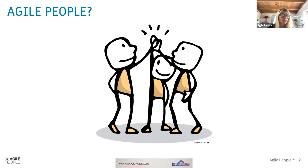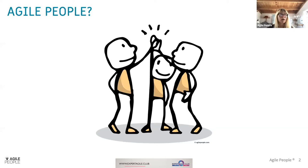We have taken the values and principles from the Agile Manifesto, mixed them with the Modern Agile framework, and spiced it up with our own Agile People Manifesto that you can find on agilepeoplemanifesto.org. From there we created 35 principles that we believe all organizations, regardless of size or industry, need to embrace. But today we are not going to talk about those 35 principles.